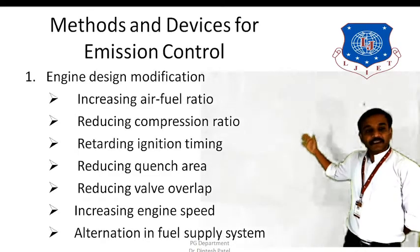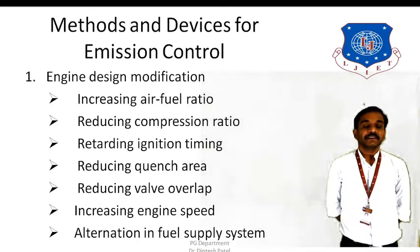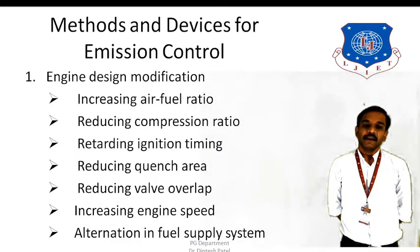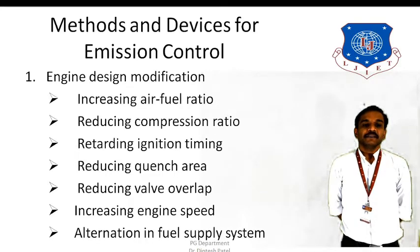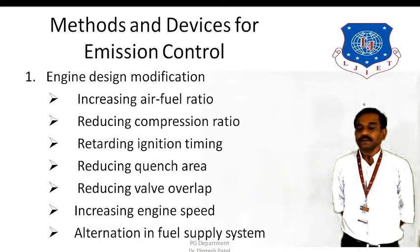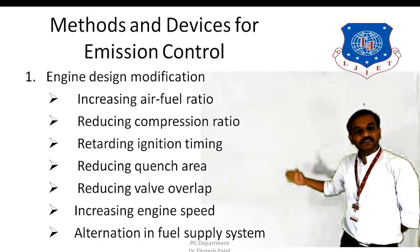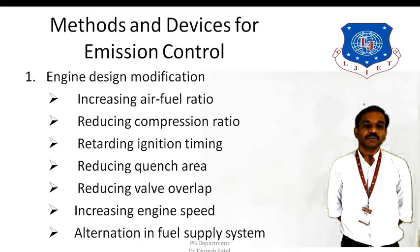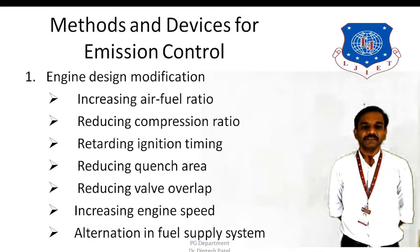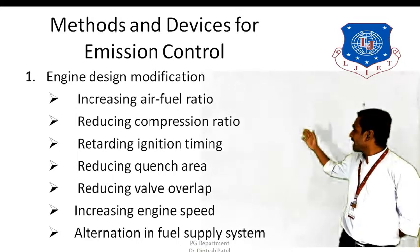Let's start with the different methods or devices for emission control. The first one is by changing the design of the engine. Some suggestions are given which can be implemented to control the emissions emitted from vehicles. The first one is by increasing the air-fuel ratio.